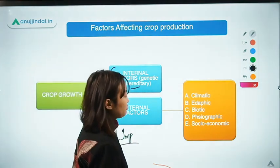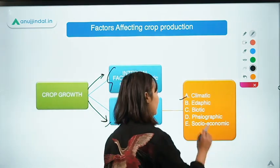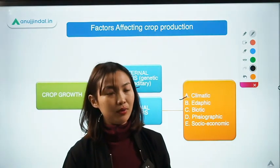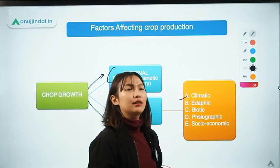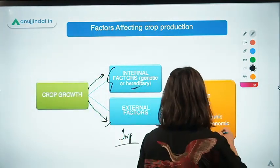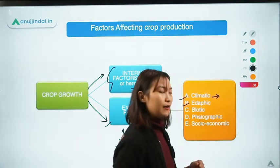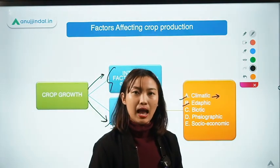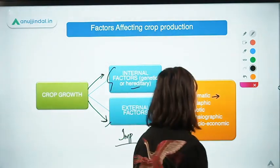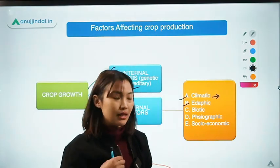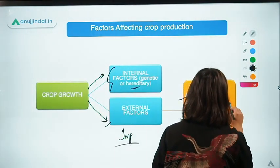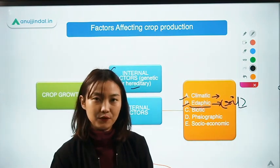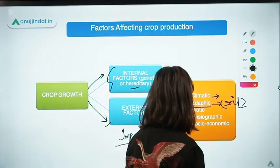Some of the external factors include climatic factors, which basically include temperature, solar radiation, rainfall, precipitation, and the gases in and around the atmosphere. Coming to edaphic factors, this is also one of the very important factors which influence crop growth, proper development, and yield. Edaphic factors include all your soil-related factors — this is very important as plants get their food through the soil itself.